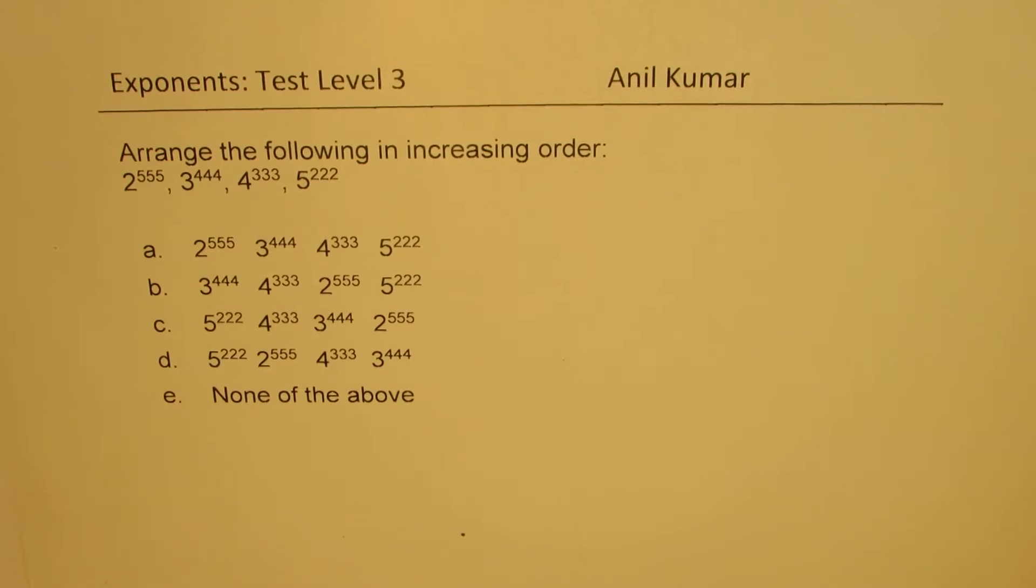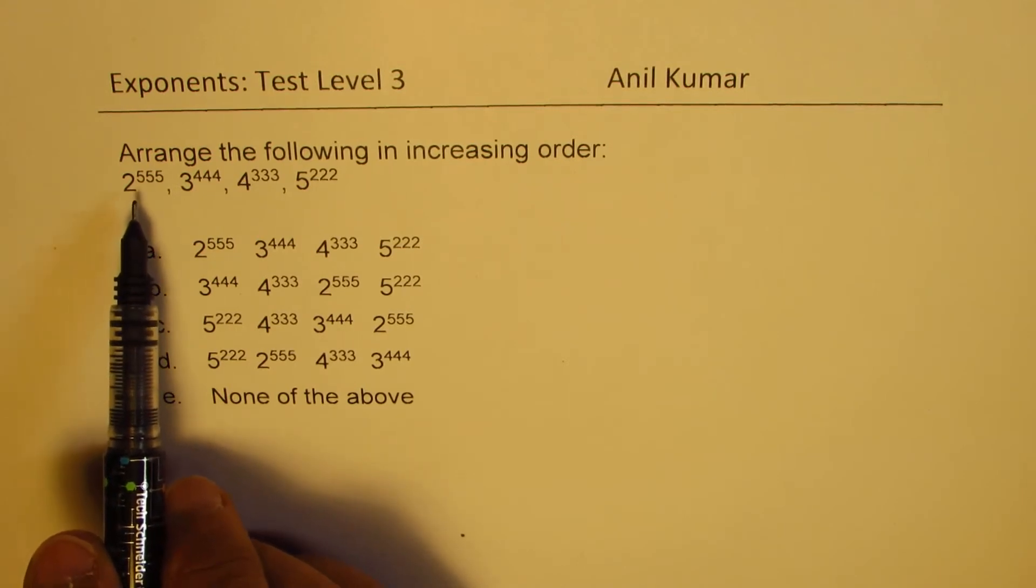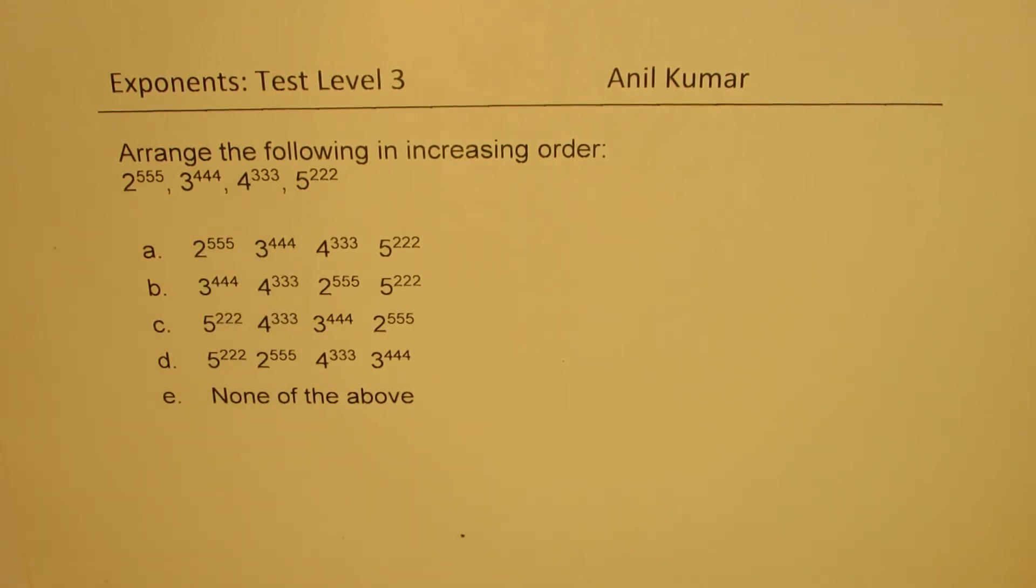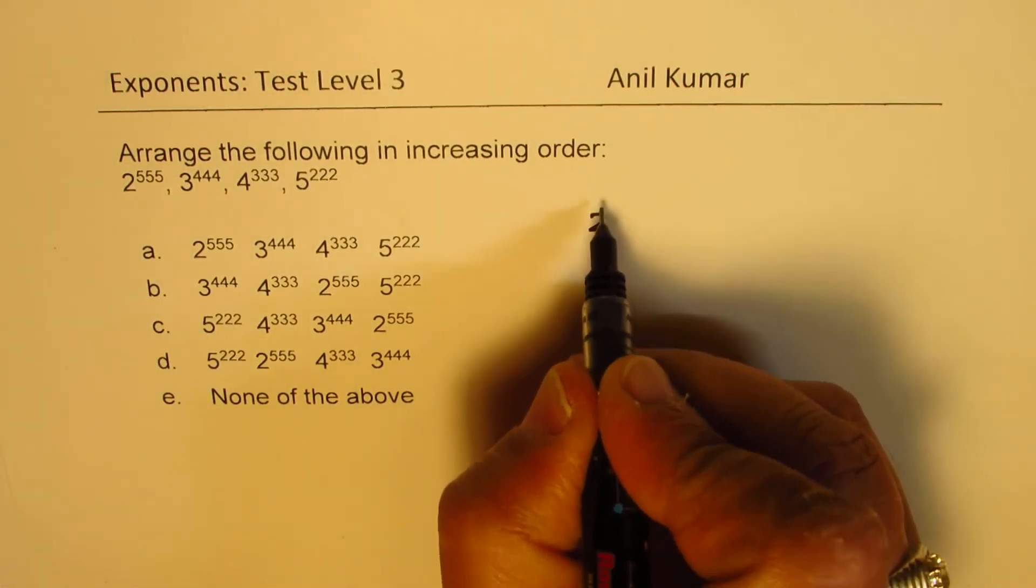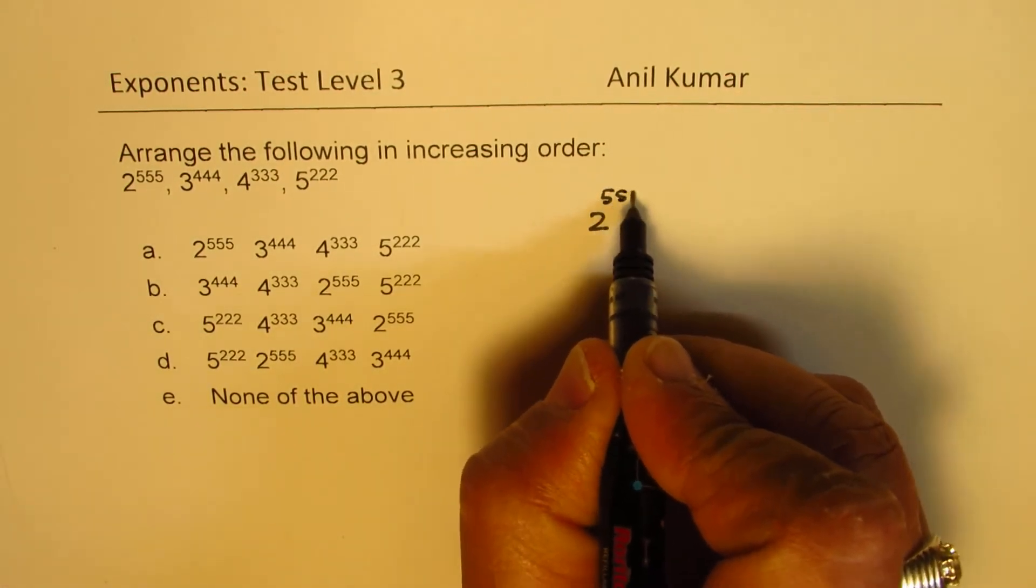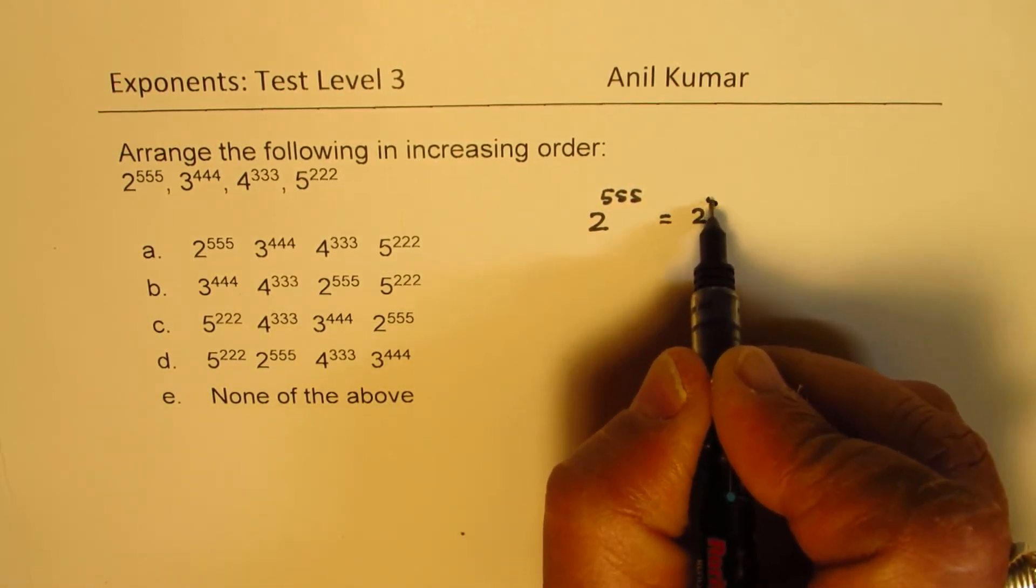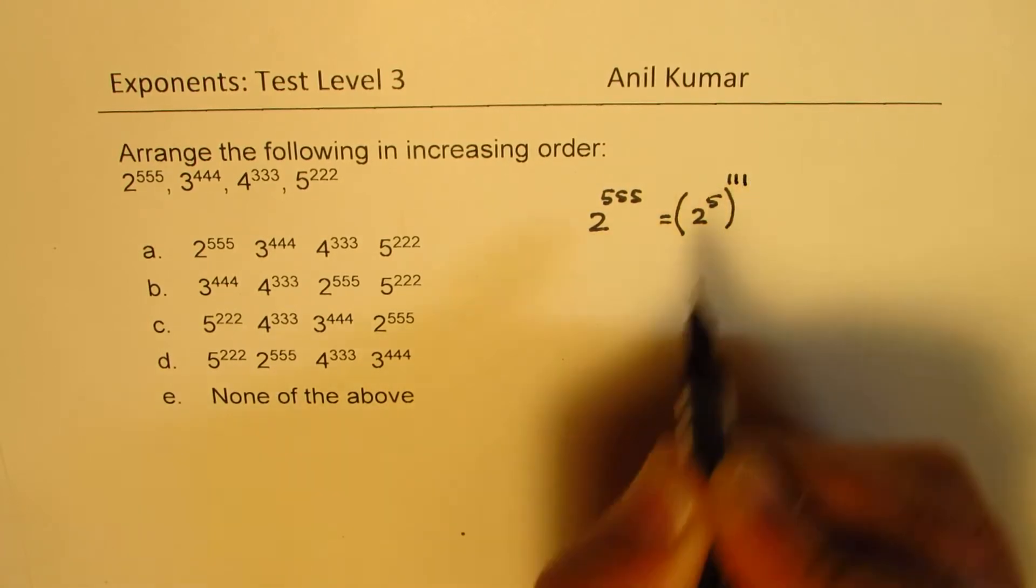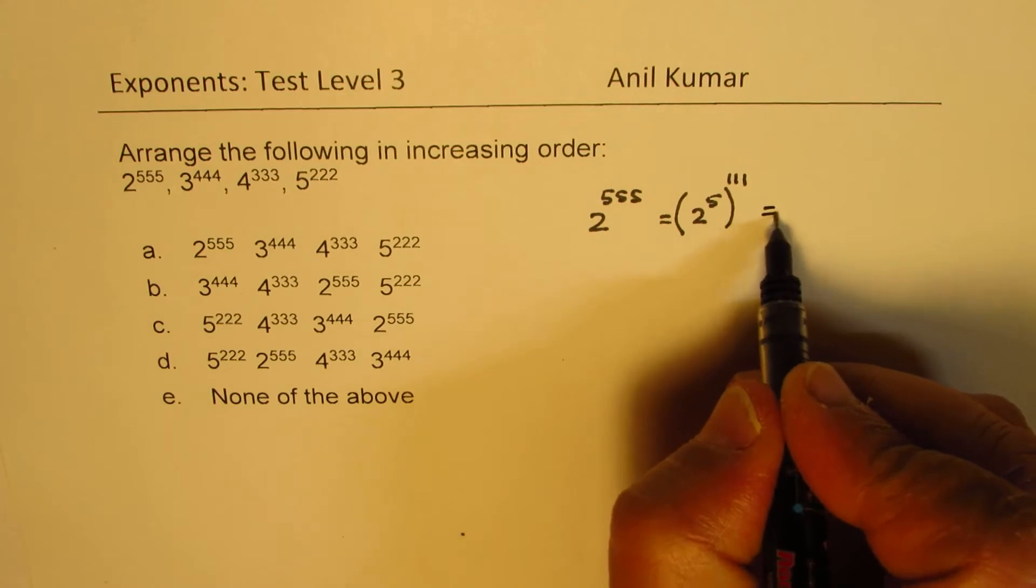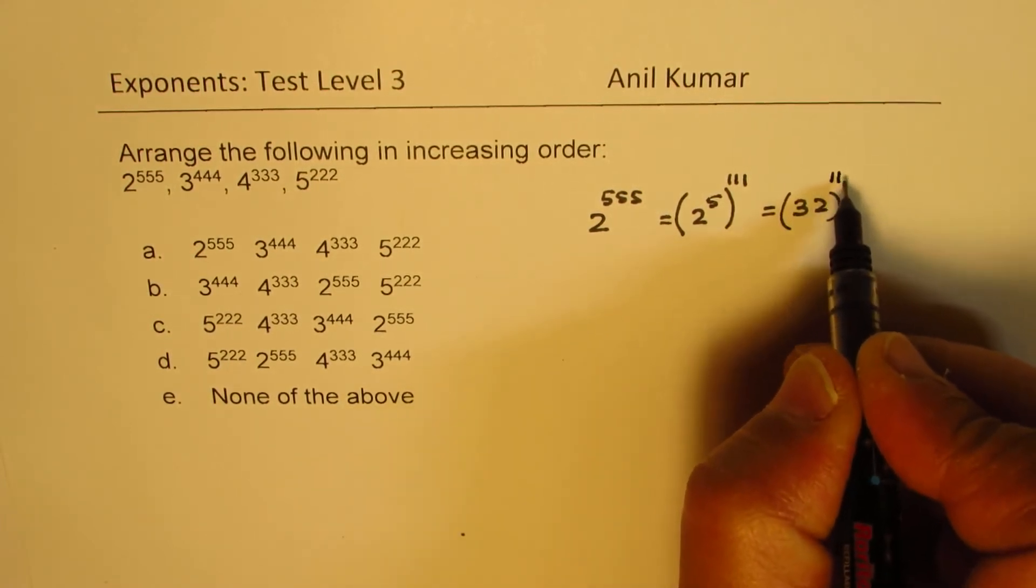Now, to do such questions, what we can do is see that 111 is a common factor of all these exponents. So, the term which is 2 to the power of 555 can be written as 2 to the power of 5 to the power of 111. Now, 2 to the power of 5 is 32, so we get 32 to the power of 111.